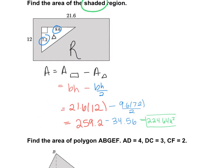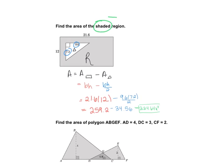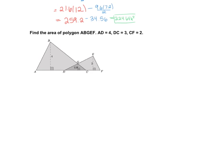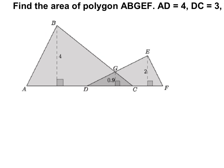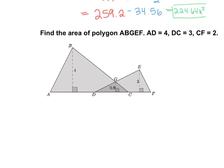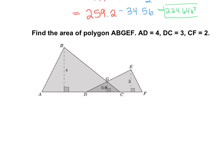That is how you approach a question whenever it says find the area of your shaded region. I'll zoom out so you can get a full picture of the screen. Now let's go over to the next problem. As we find the area of polygon ABGEF, we know that AD is 4, DC is 3, and CF is 2. I'm going to label that in our image. This is probably the hardest problem on this note sheet today. So AD is 4, DC is 3, and CF is 2.